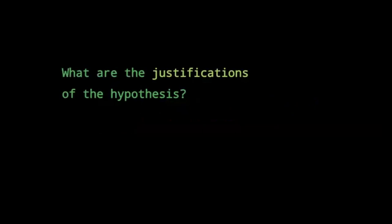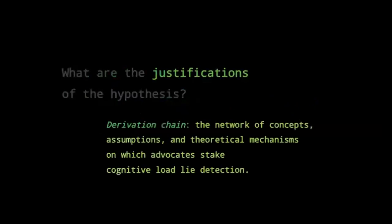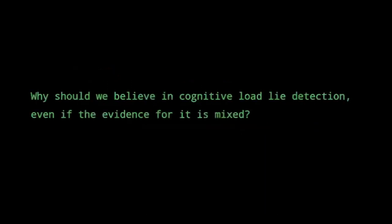So what are the justifications of this hypothesis I'm talking about? By justification, I mean a derivation chain — the network of concepts, assumptions, and theoretical mechanisms on which advocates would stake the cognitive load lie detection hypothesis. In plain speak: why should we believe in cognitive load lie detection, even if the evidence for it is mixed? So I went looking for these justifications so I could teach them to my students.